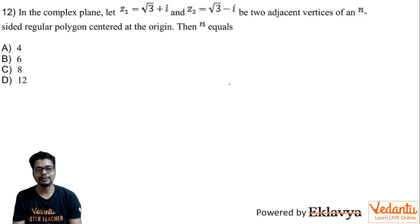In the complex plane, let Z1 equal to root 3 plus iota and Z2 equal to root 3 minus iota be two adjacent vertices of an N-sided regular polygon centered at the origin. Then N equals.